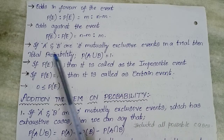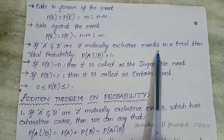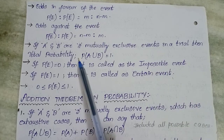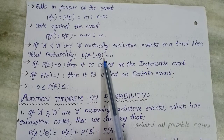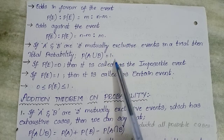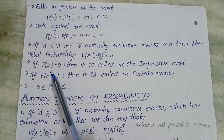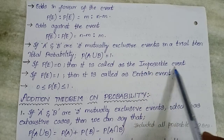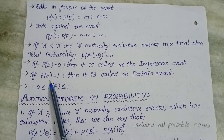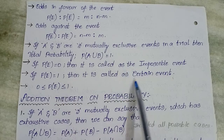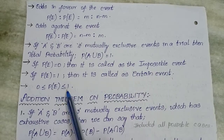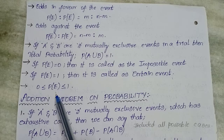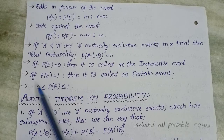If A and B are two mutually exclusive events in a trial, then the total probability P(A ∪ B) is equal to 1. P(E) equal to 0 means probability of that event is 0, then it is known as an impossible event. If probability of any event is equal to 1, then it is known as a certain event. And the probability value of any event lies between 0 and 1 — it will not exceed 1 and it will not go below 0.